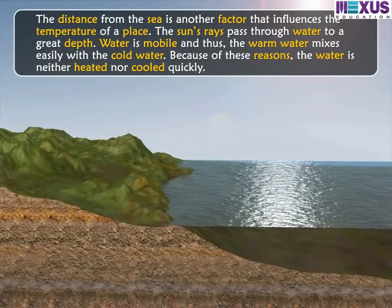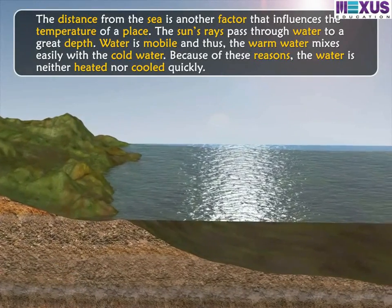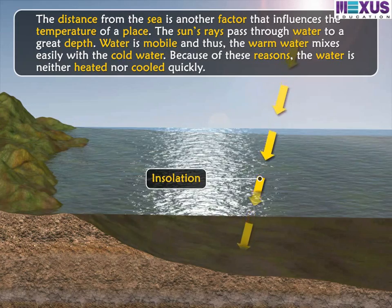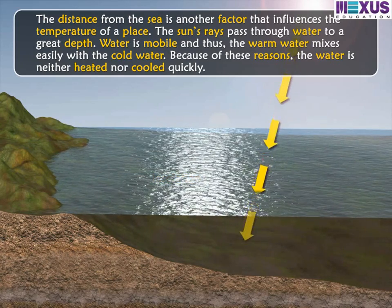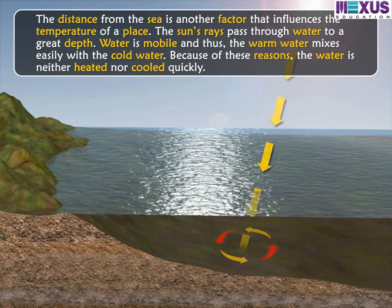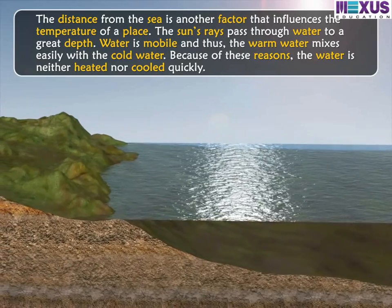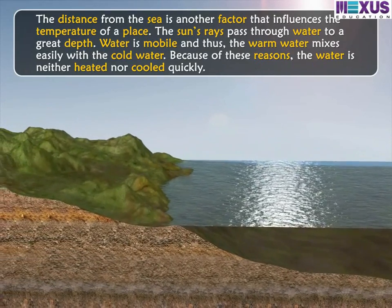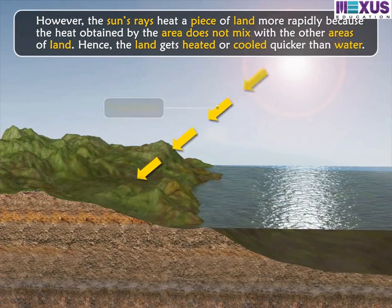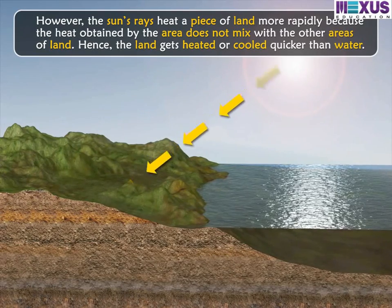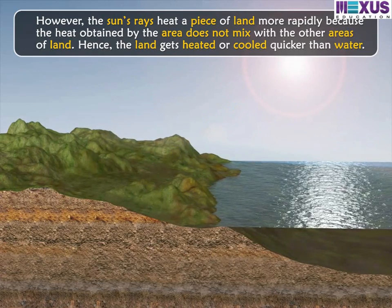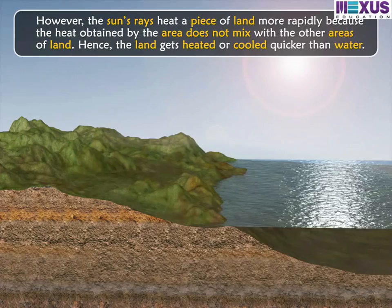Distance from the sea is another factor that influences the temperature of a place. The sun's rays pass through water to a great depth, and water is mobile, so warm water mixes easily with cold water. Because of these reasons, water is neither heated nor cooled quickly. However, the sun's rays heat land more rapidly because the heat obtained by the area does not mix with other areas of land. Hence, land gets heated or cooled quicker than water.